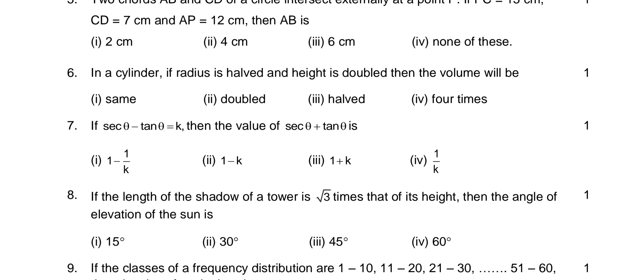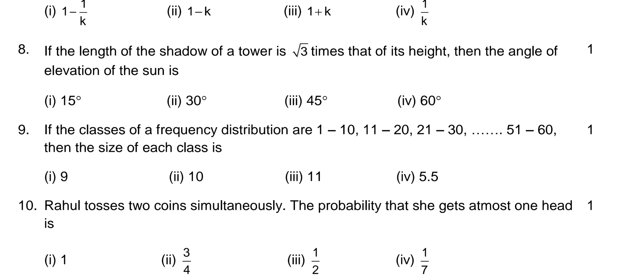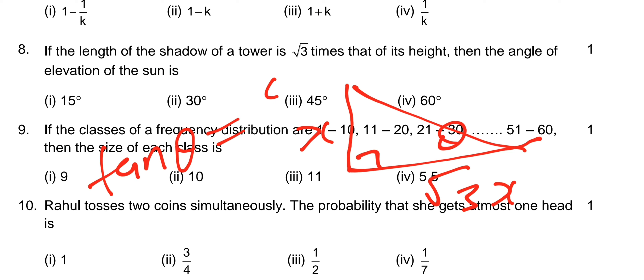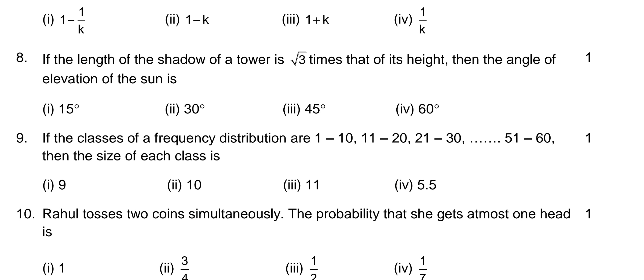If the length of the shadow of a tower is √3 times the height, suppose height is x, so shadow = √3x. The angle of elevation: tan θ = opposite/adjacent = x / √3x = 1/√3, which gives θ = 30 degrees.